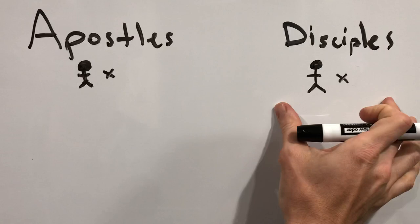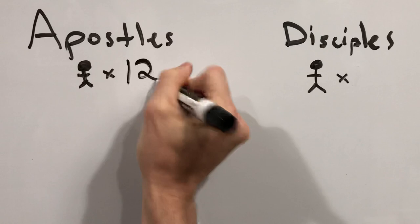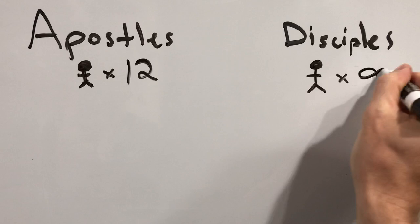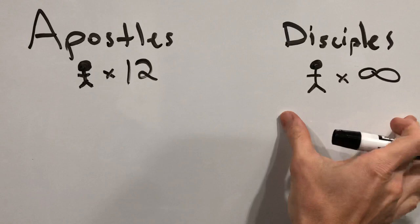The best way to remember the difference between the two terms is that there are 12 specific apostles in the Gospels, and then the disciples — there's tons. There's an infinite number of people who can be followers of Jesus, but there's only a specific number of people who are the apostles.